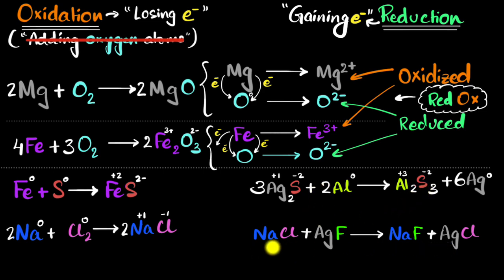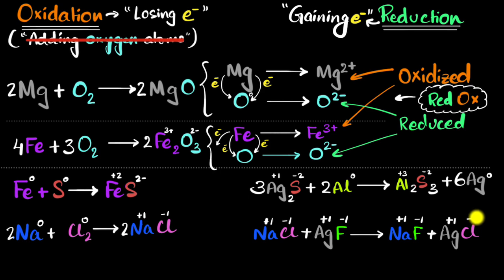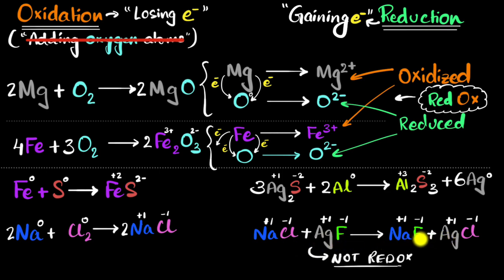The last reaction: sodium chloride has +1/−1, silver fluoride has silver +1 and fluorine −1, sodium fluoride has sodium +1 and fluorine −1, silver chloride has silver +1 and chlorine −1. None of their charges changed, which means none of them lost or gained electrons. So this is not a redox reaction because nothing underwent oxidation and nothing underwent reduction. Not every reaction is a redox reaction.